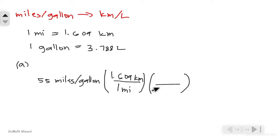We have 1 gallon equals 3.788 liters, and we can now cancel out the units. We are left with kilometers per liter. Multiplying the values, 55 times 1.609 and dividing by 3.788, we get a value of 23.4 kilometers per liter. Now in part B, we have a given of 1500 kilometers.